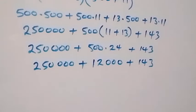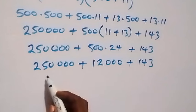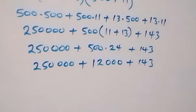And here, when we sum this up. We have 250,000 plus 12,000. That gives us 262,000 from there.